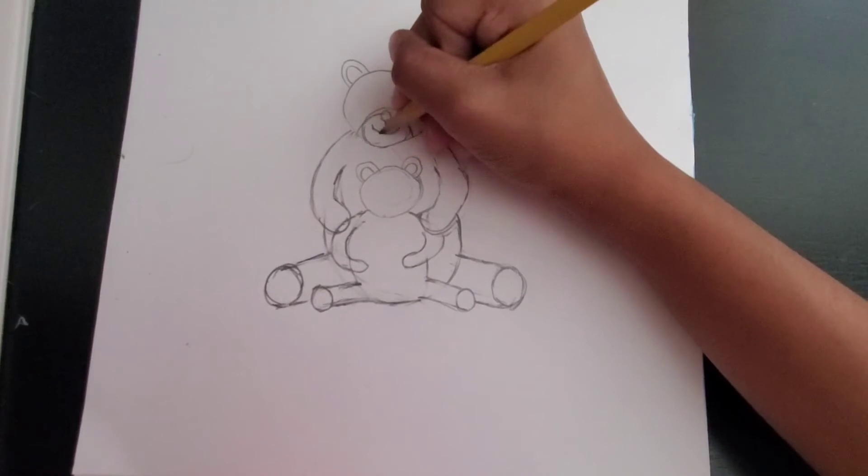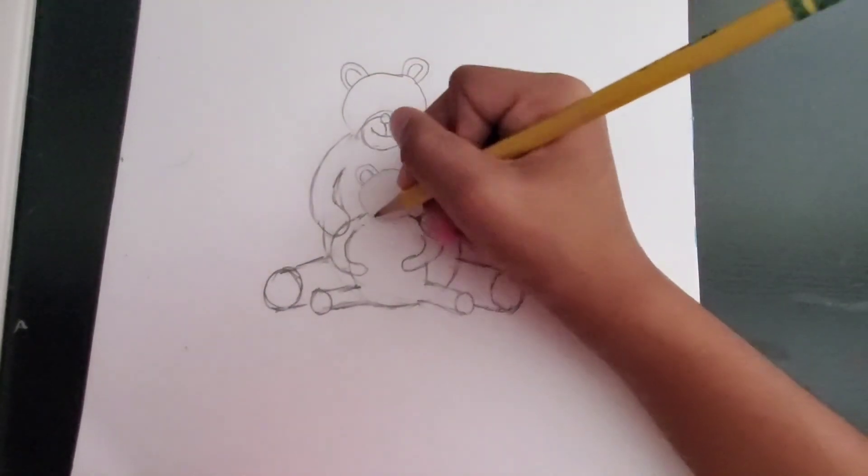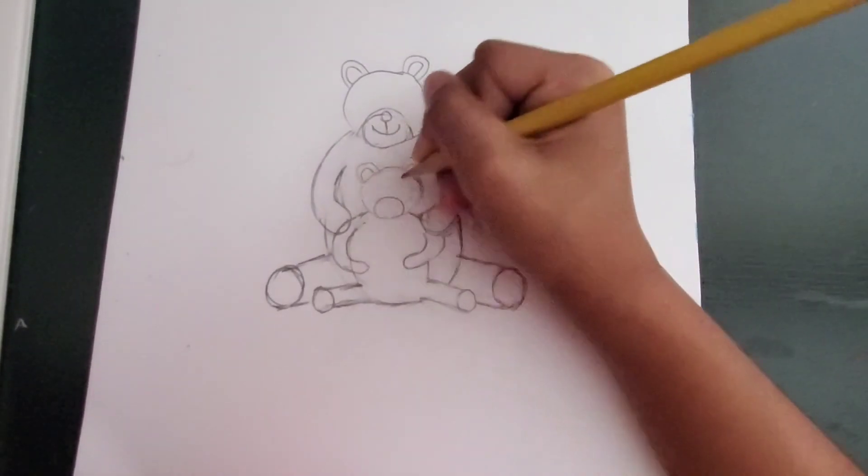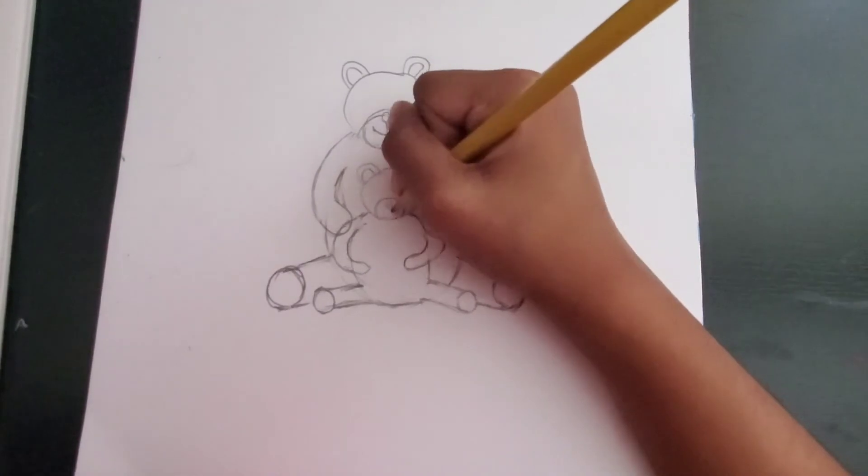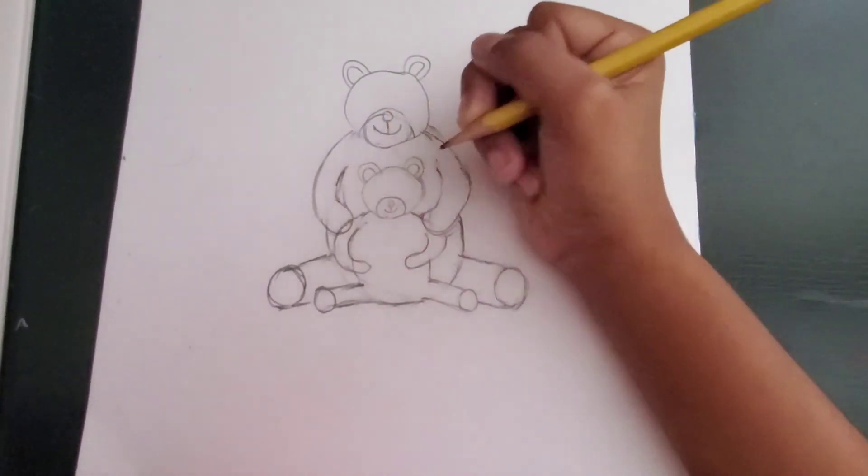So we need to do the same thing for the baby as well. First we make a circle inside. Inside that a little circle for the nose. And then a line. And a smiley face.